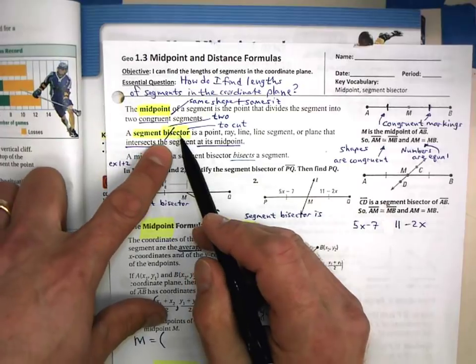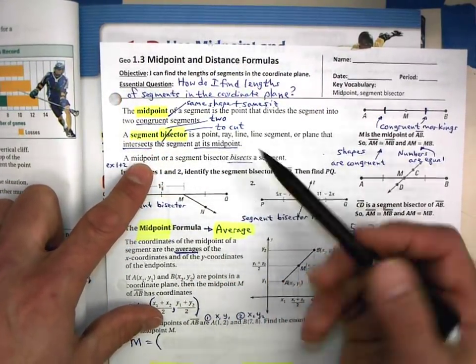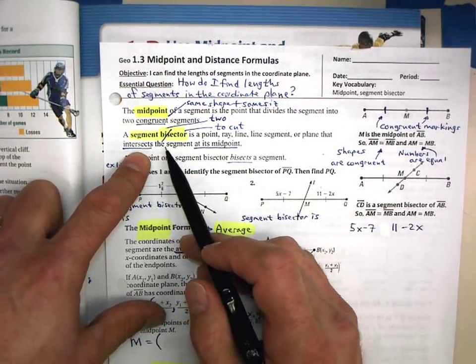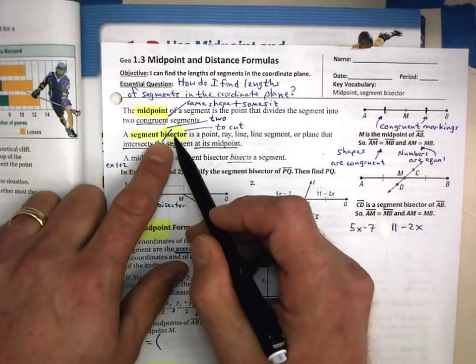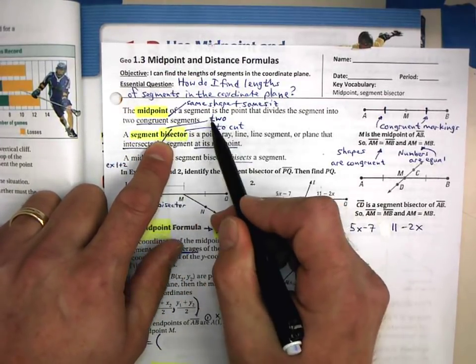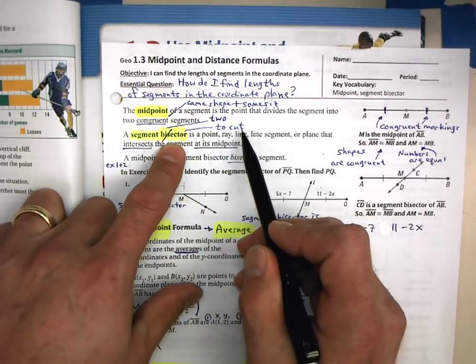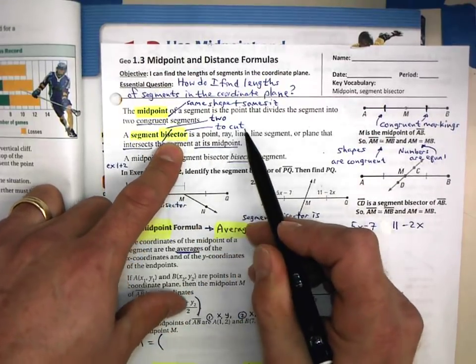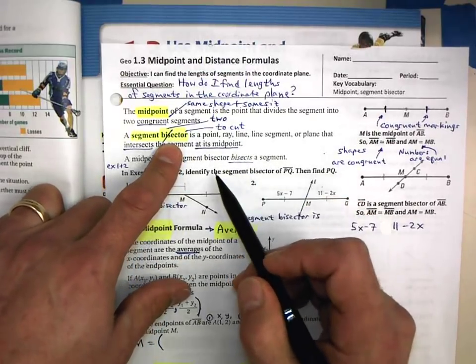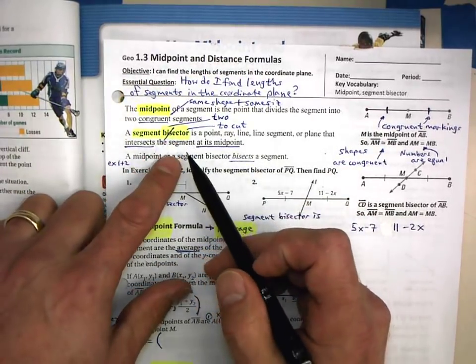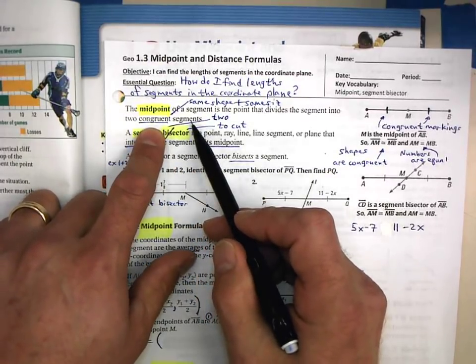A segment bisector is a point or ray or a line or a line segment or a plane, or it could be my pen that intersects the segment at its midpoint. So bi, like a bicycle, that's two, that's the prefix there. And then sector comes from the Latin for to cut. So a bisector cuts the original thing into two pieces. And as it's used in geometry, it is two congruent pieces or segments.